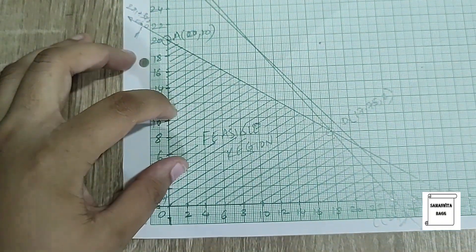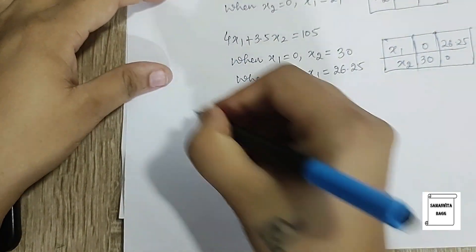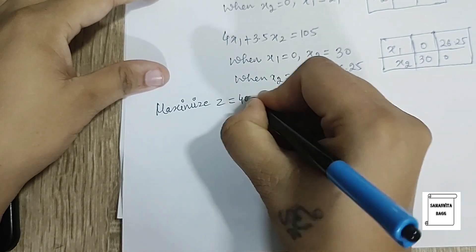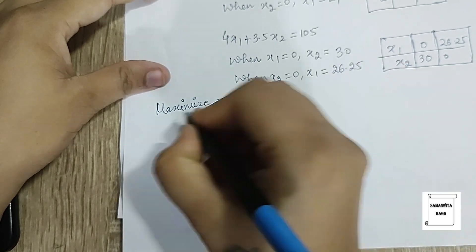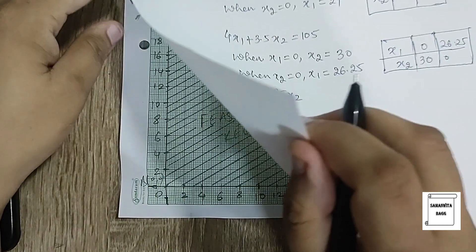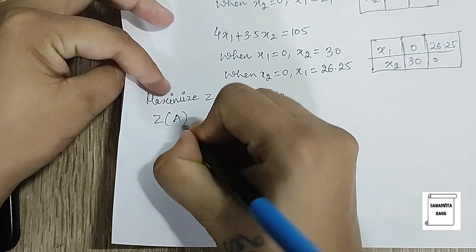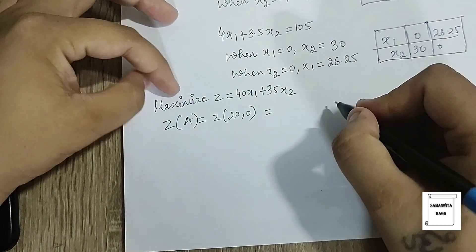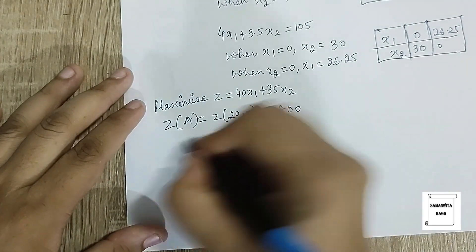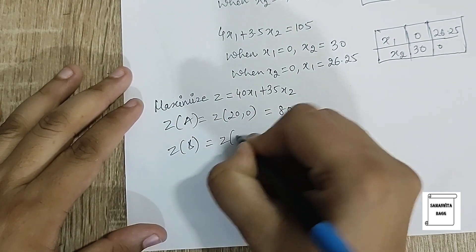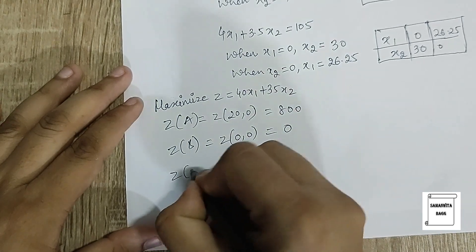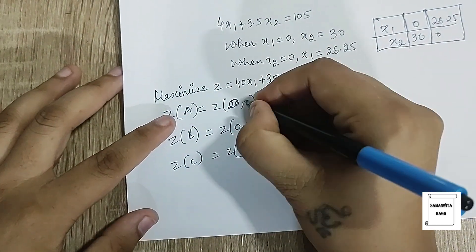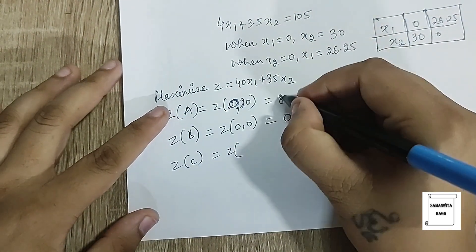Now I calculate Z. The question is to maximize Z = 40x₁ + 35x₂. I'll start with Z at A, that is (20, 0), so when I substitute this becomes 800. When I substitute for point B (0, 0), this is just 0. When I substitute for C (0, 20), this will be 700.